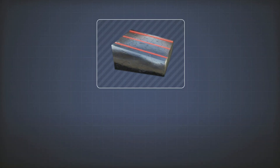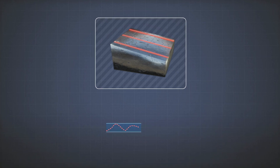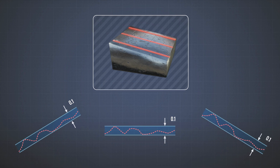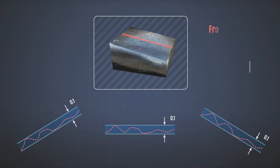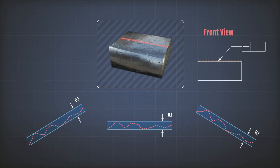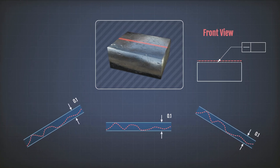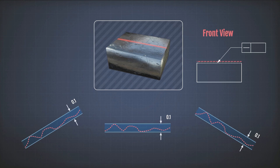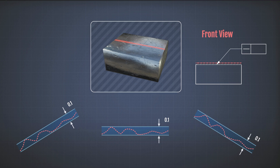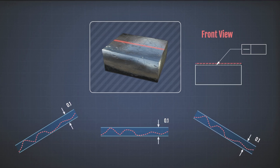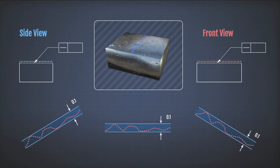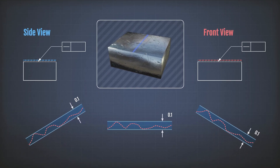Two important thinking mistakes you have to avoid: The first is thinking that the straightness tolerance could control the orientation or position of your element. The second mistake is thinking that putting straightness on a surface means all lines of the surface should be straight in all directions — no, only those parallel to the line you tolerated. If you want to control straightness in another direction, such as the direction perpendicular to the screen, you will have to put another straightness tolerance pointing at that line.